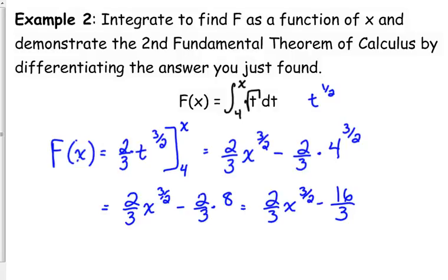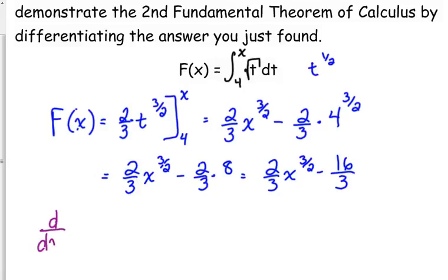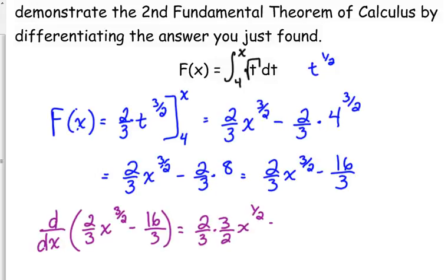Now, demonstrating the second fundamental theorem of calculus by differentiating the answer that is found. So we're going to take the derivative of that function that we just found: 2/3 x to the 3/2 minus 16/3. When we take the derivative of that, we've got 2/3 times, bring down our exponent, subtract 1 from our exponent. The derivative of a constant is 0. Well, look at what we got. x to the 1/2, which is what we would have gotten if we had just plugged x into our function, or into the function that was being integrated.